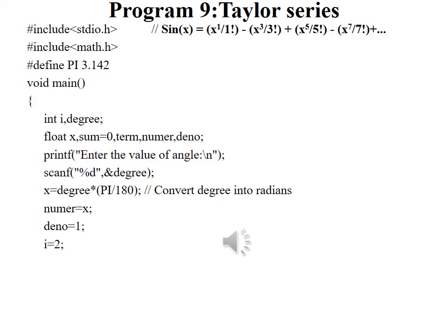Using the concept of symbolic constant we will define the value of pi as 3.142. Next we will declare the variables which are used in the program. Then we will allow the user to enter the value of degree.